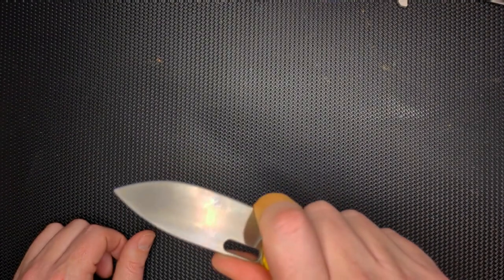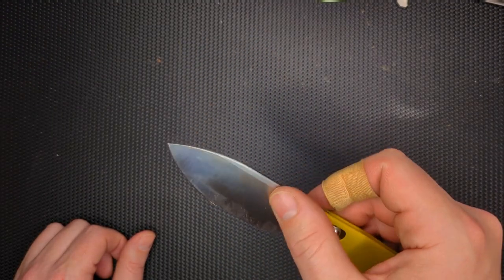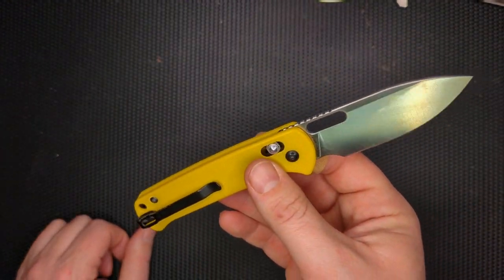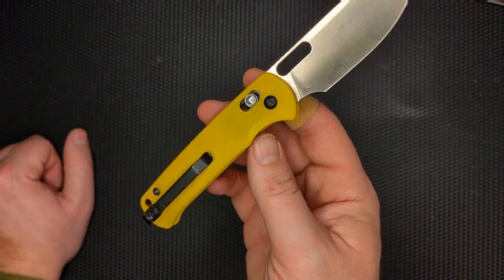The finger choil, the choke up point on this is really nice. The finger choil is very nice. And there's some nice jimping here. This is a bar lock. It's often been called or referred to as kind of like a budget Benchmade Bug Out.